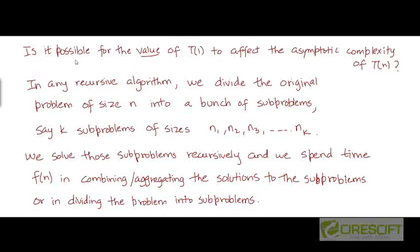Here is a question we will be examining in this video: Is it ever possible for the exact value of the constant t(1) to affect the asymptotic complexity of t(n)? In other words, is it possible that by changing the value of t(1), say from 1 to 5 or 10, we could potentially change the overall asymptotic complexity of t(n)?